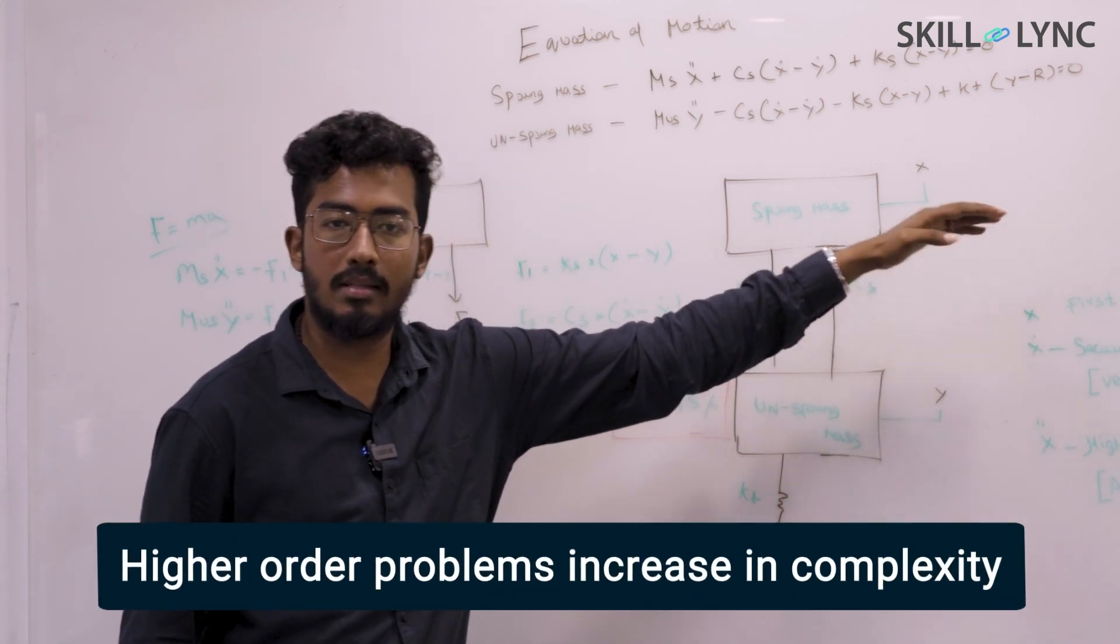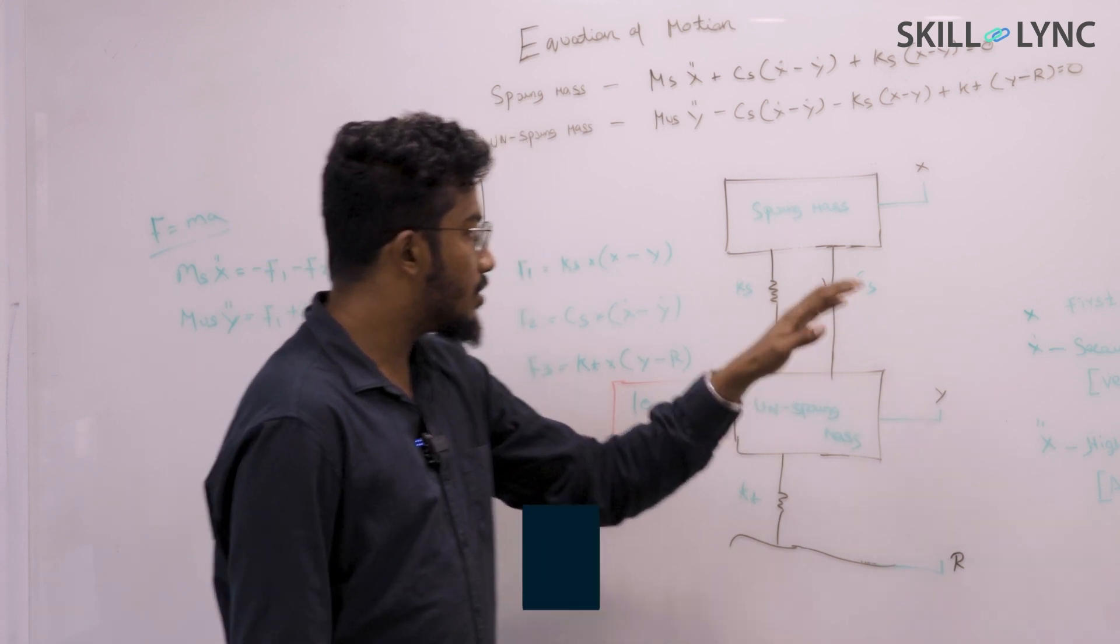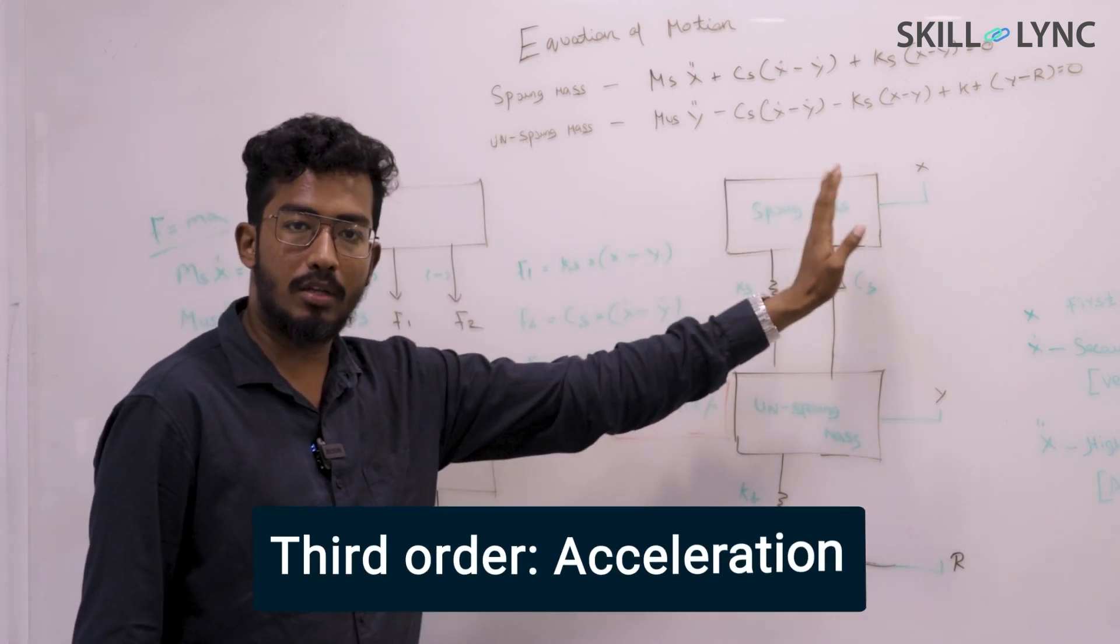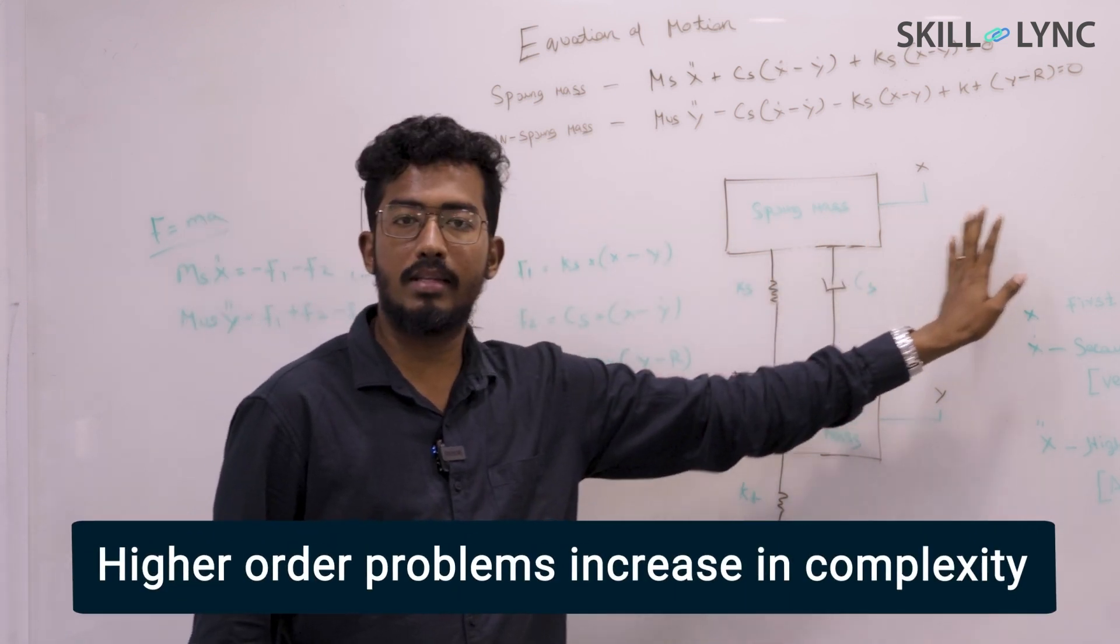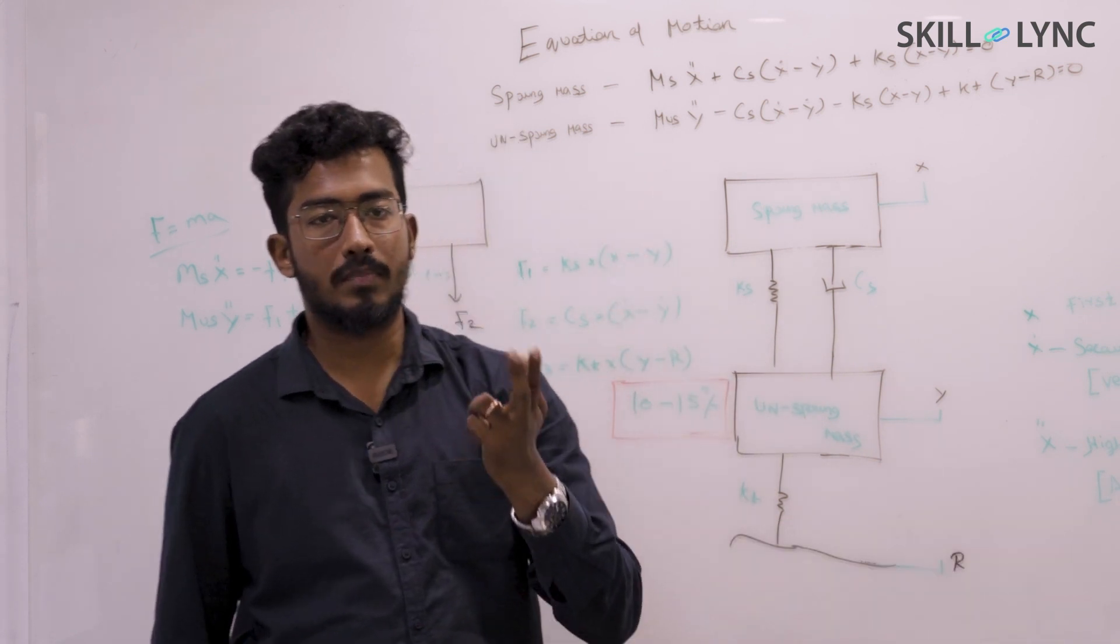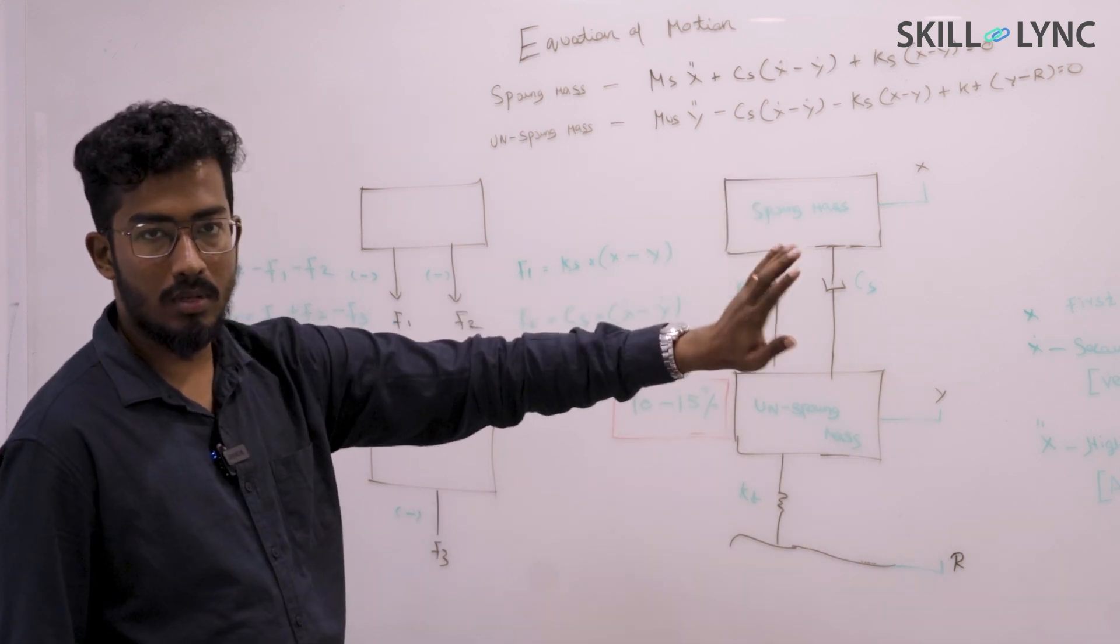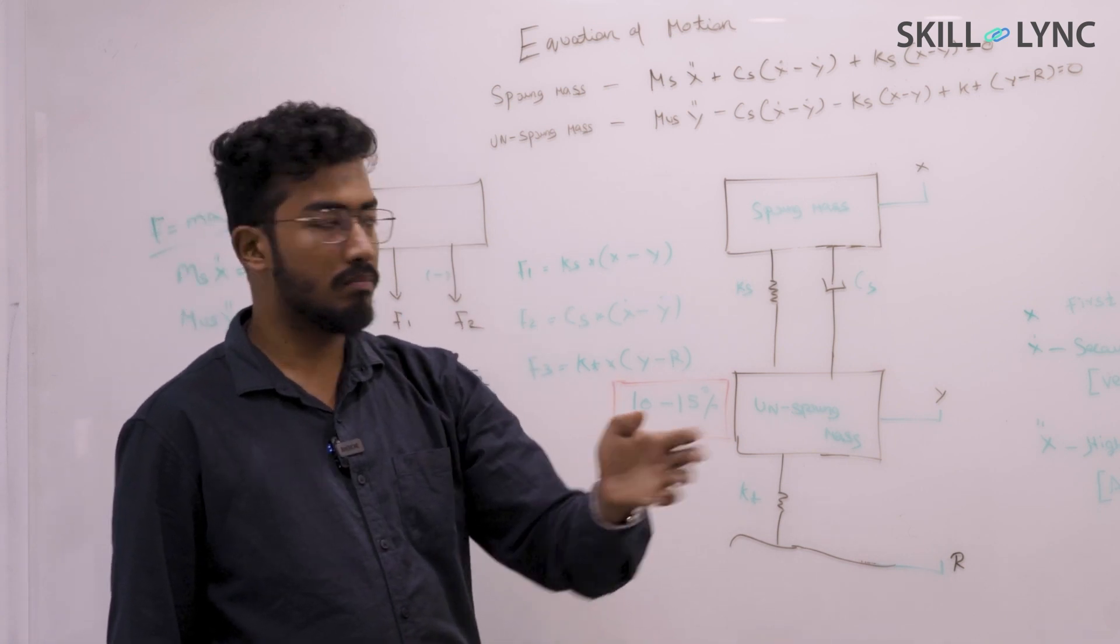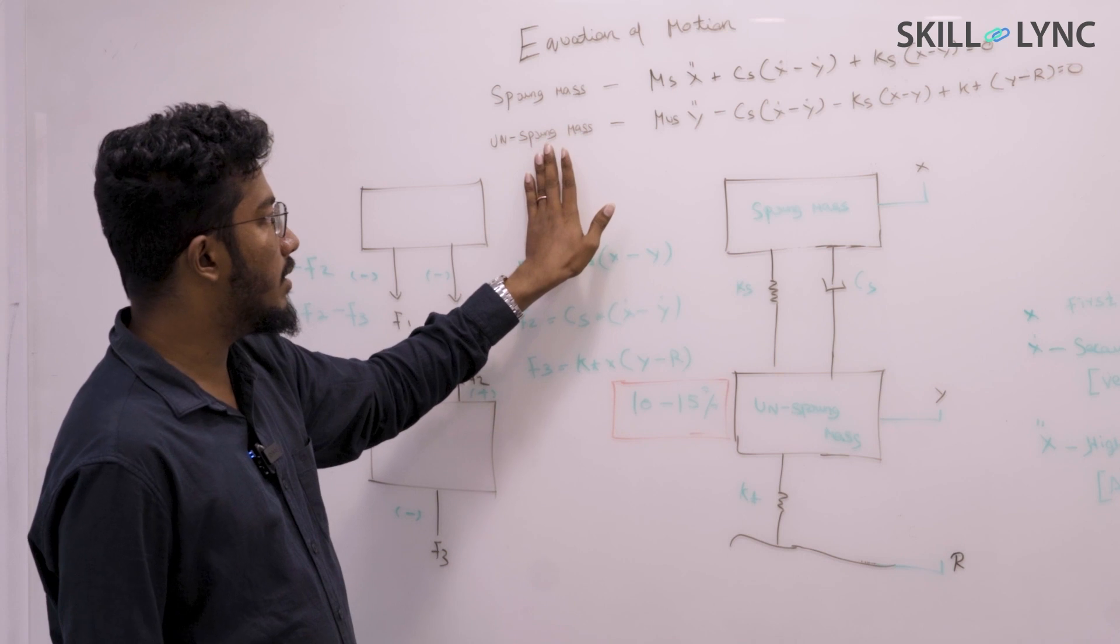The more the order keeps increasing, the more complex the problem gets. Any rigid body that you have in multi-body systems, you're going to have only three deliverables: one is displacement, velocity, and acceleration. So we're going to take this and come up with the equation of motion and understand what are the things that affect the motion of your sprung mass.